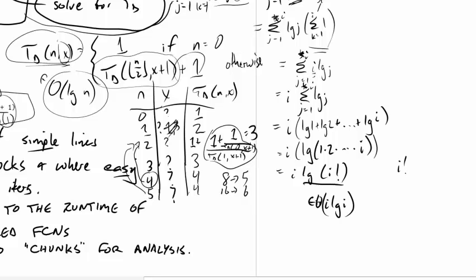This i factorial piece, that is less than or equal to i to the i. Because this is i terms multiplied together, 1, 2, 3, 4, up to i. And this is i terms multiplied together, but they're all i. So they're all at least as big as this. So for any i larger than 0, this relationship holds, which makes this an upper bound. And so log i factorial is less than or equal to log of i to the i. Well, the log of i to the i is equal to i times the log of i. And so that gives us an upper bound of i log i.